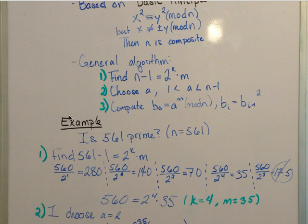Okay, so for this example we want to find out if 561 is prime, so we're saying n equals 561. For step 1, we find n minus 1, 561 minus 1, so that it's equal to 2 to the k times m. So first we want to find the k; if we find the k we'll have the m as well.